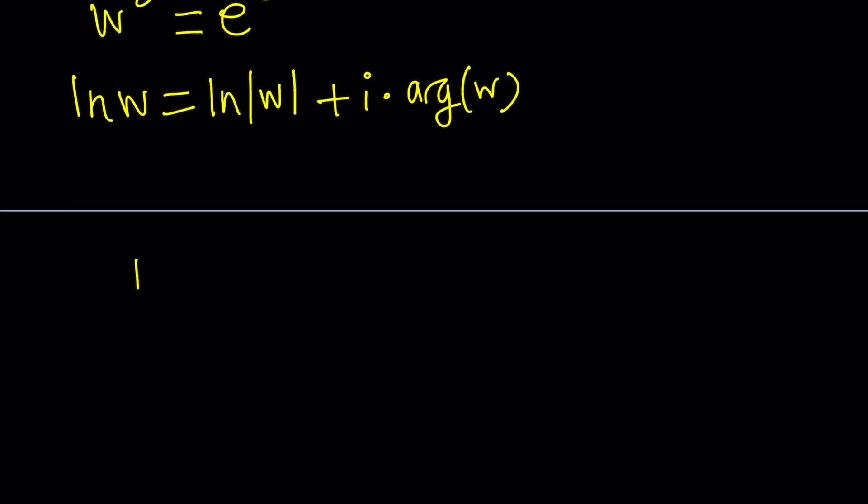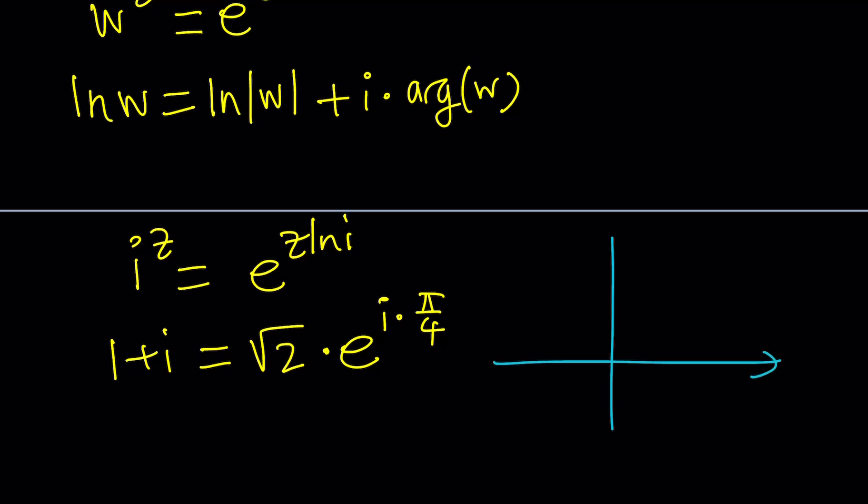So let's go ahead and start by converting i to the z to e to the power z ln i, and then changing the 1 plus i to polar form, which is square root of 2 times e to the power i times pi over 4. And this comes from the very fact that if you think about this number in the argand plane, it's basically going to look like this. You have 1 plus i, so it's kind of like a 1, 1. And the angle it makes is going to be pi over 4 radians. And of course, square root of 2 is just going to be its absolute value. So it's kind of like R e to the i theta, which is the polar form.